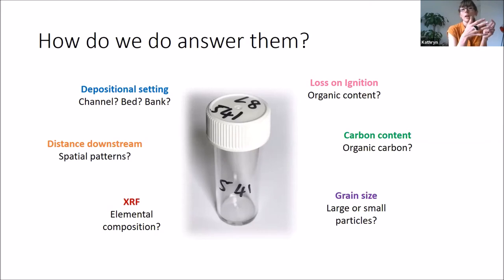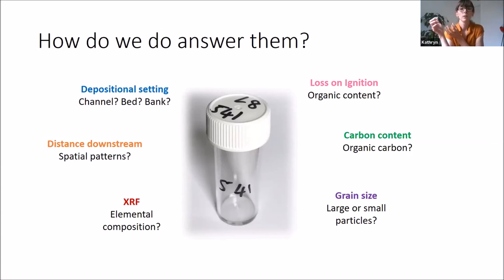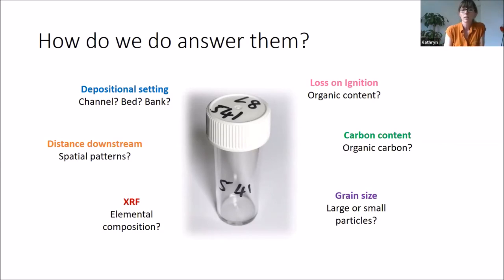We also want to think about the organic content — what is the carbon, where is it coming from? As the glacier retreats and biological processes start to take hold, can we track that? Can we see areas where there is a much higher preference for organic material to be growing and stored in the environment? There are a whole lot of different analyses, so it takes quite a long time for individual samples to go through all these different processes.